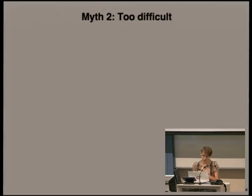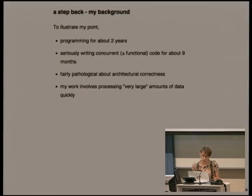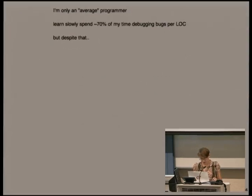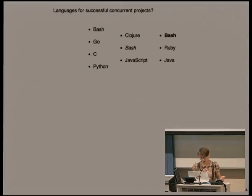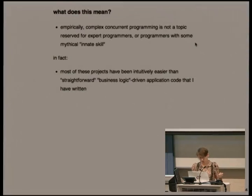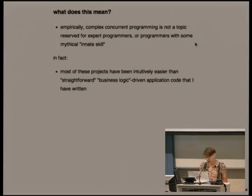The second myth is that it's too difficult. I've been programming for about two years, running concurrent code for nine months. I consider myself a reasonably average programmer, so I spend a lot of time debugging — my bugs per line of code is astounding. Despite that, I went directly to doing concurrent programming without really a bridge of experience writing simple imperative programs. Most of those projects are intuitively easier for me than writing straightforward code that simply manipulates business logic sequentially. I think it's really an issue of how people have been educated to program.